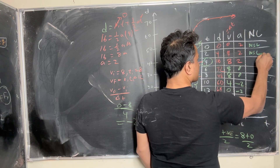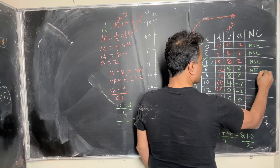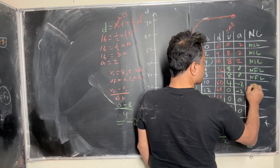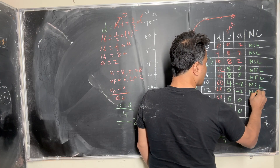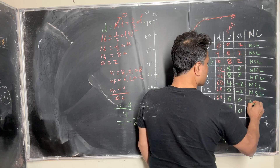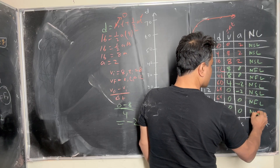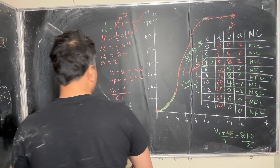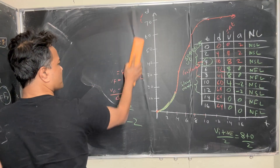So acceleration is −2 here, zero here, and zero there. This phase is Newton's second law, this is Newton's first law, this is Newton's second law, and this is Newton's first law. Now I want you to see the geometry of this.